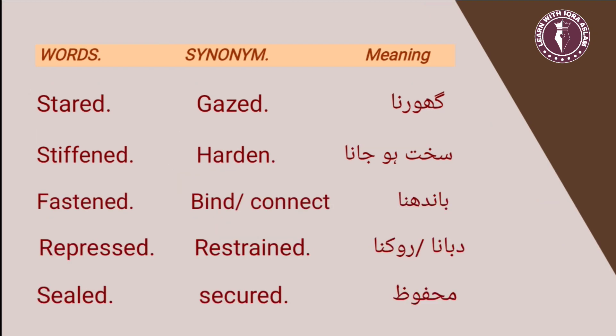Next word is 'fastened.' Fastened ka matlab hota hai baandhna. Aapne aksar suna hoga ye sentence: 'fasten your seatbelts' — yaani seatbelt baandh lein. Toh iska synonym hai 'bind' ya 'connect.' Next word is 'repressed.' Wo sentence aapne padha hai chapter mein: 'Norma repressed her smile' — yaani Norma ne apni muskurahat ko rokne ya dabane ki koshish ki. Iska Urdu meaning hota hai dabana ya rokna, aur iska synonym hai 'restrained.'